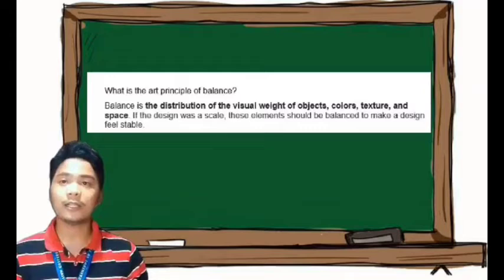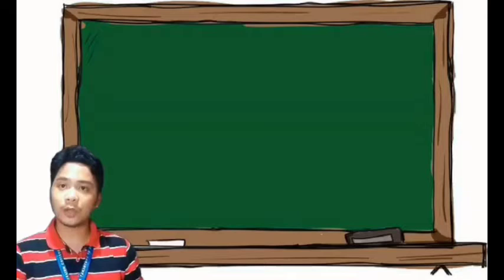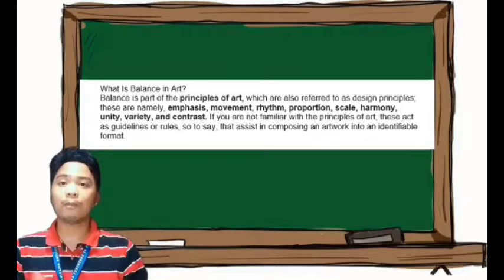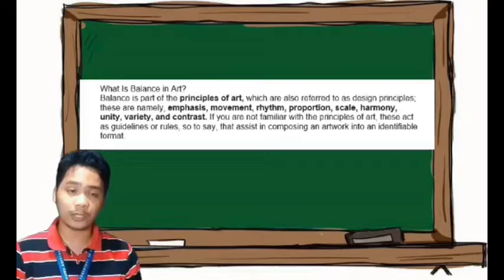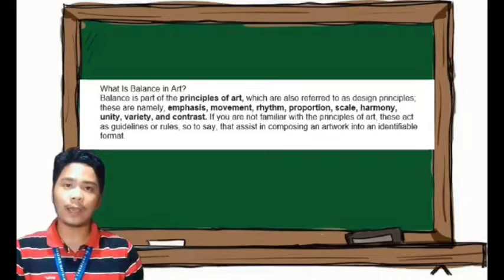Let us determine what is balance. Balance is the distribution of the visual weight of objects, colors, texture, and space. If the design was a scale, these elements should be balanced to make a design feel stable. Balance is part of the principles of art, also referred to as design principles, which include emphasis, movement, rhythm, proportion, scale, harmony, unity, variety, and contrast. These act as guidelines or rules to assist in composing an artwork into an identifiable format.